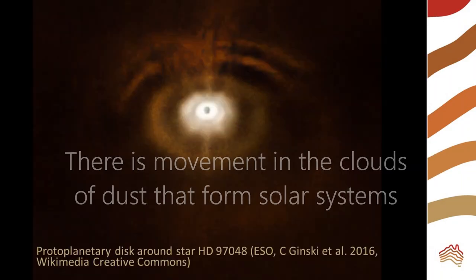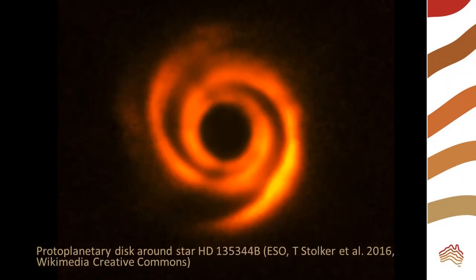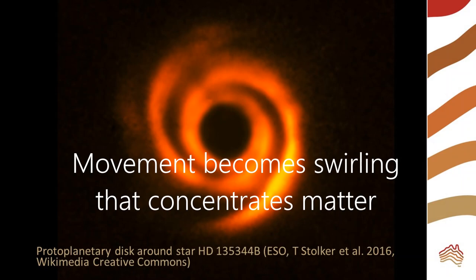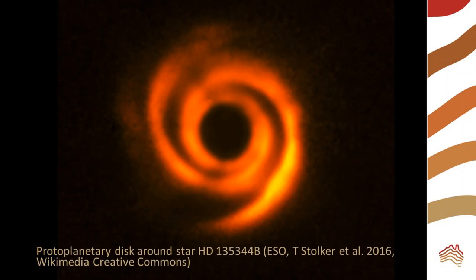Motion contributes to accretion. When objects move, they have momentum. The original clouds of dust that form the solar system have some movement. This becomes a swirling that concentrates matter in the center.